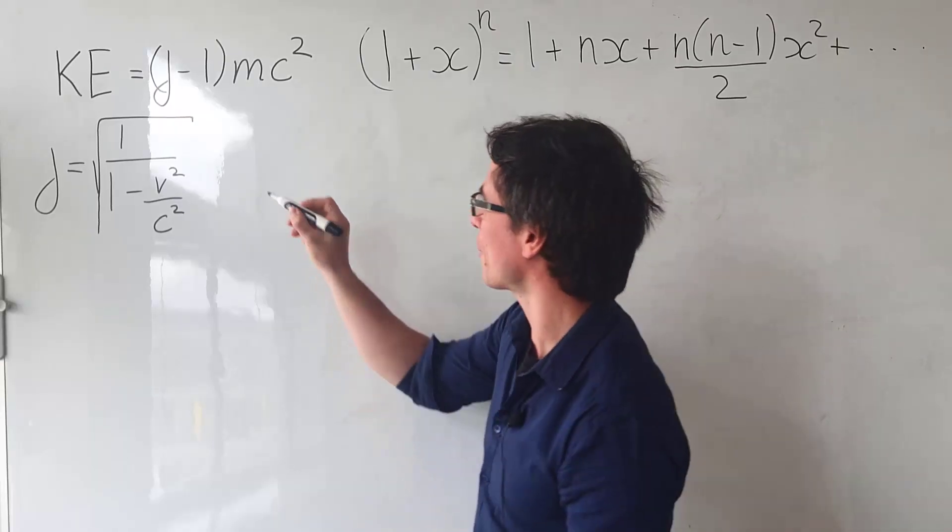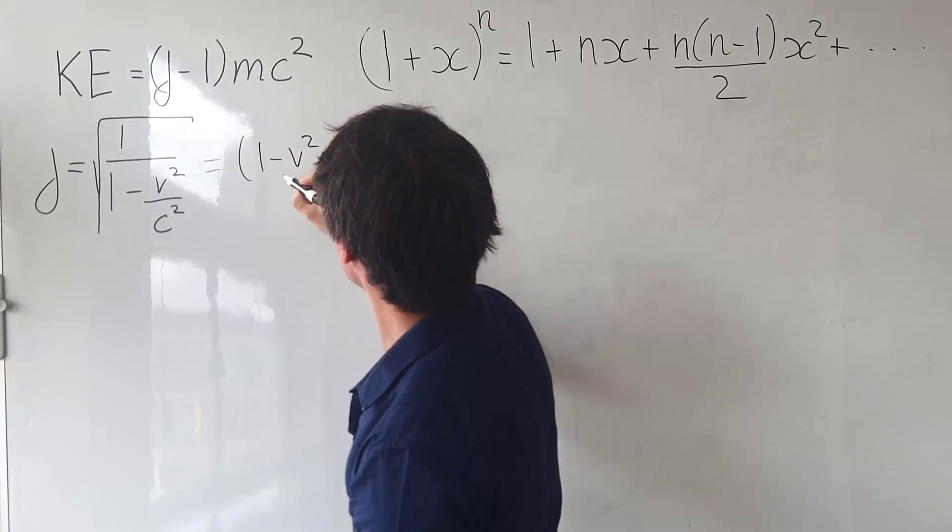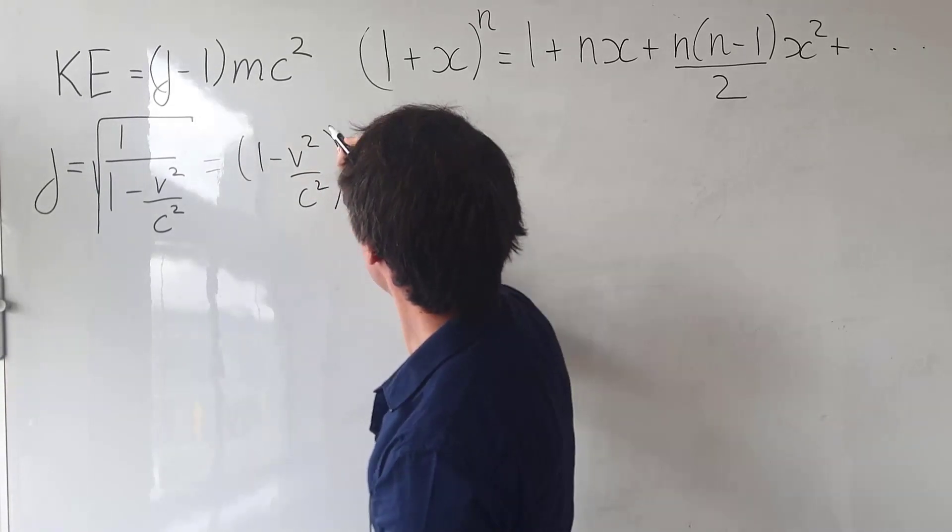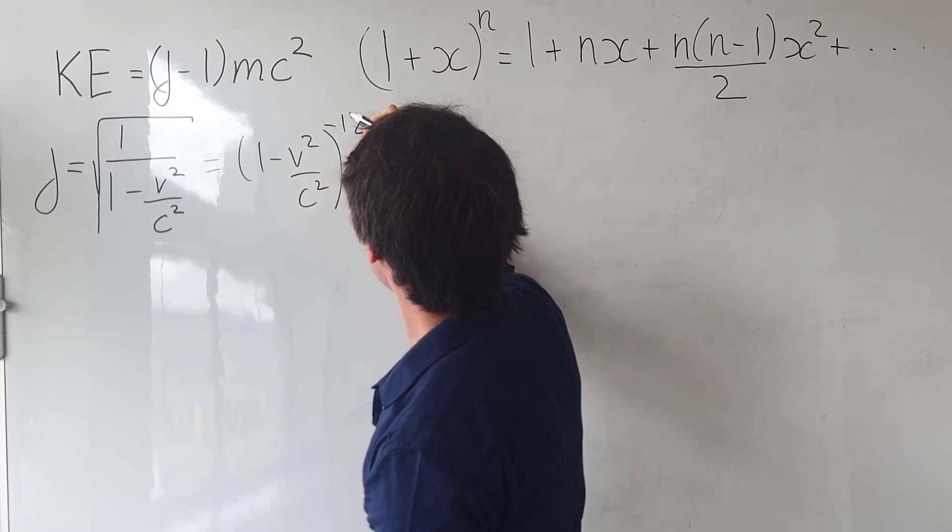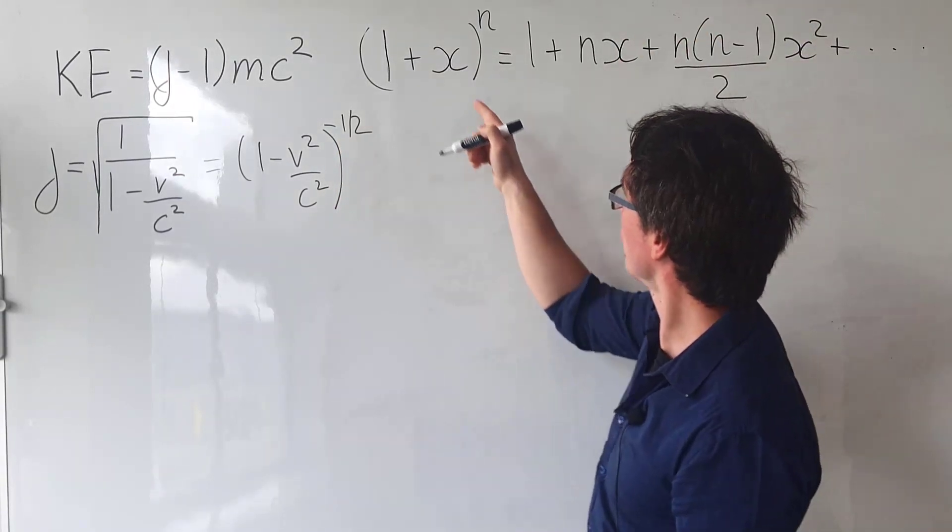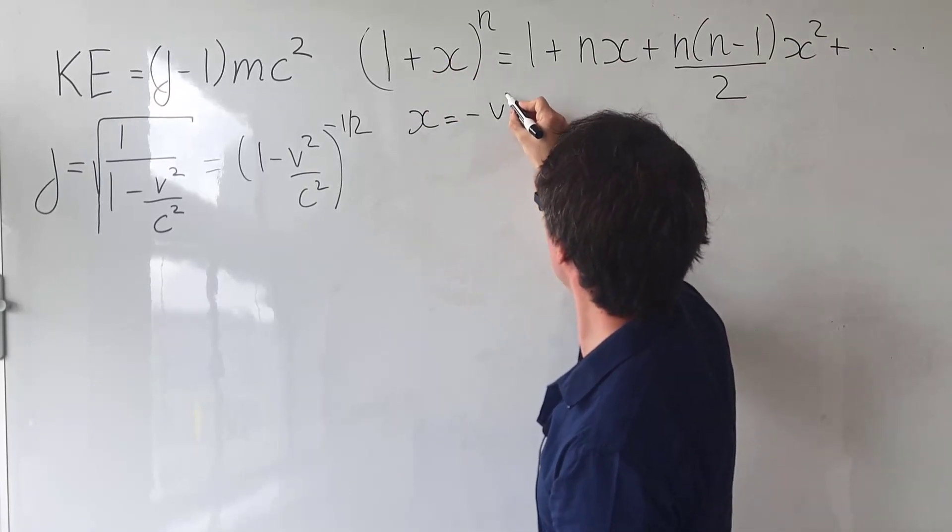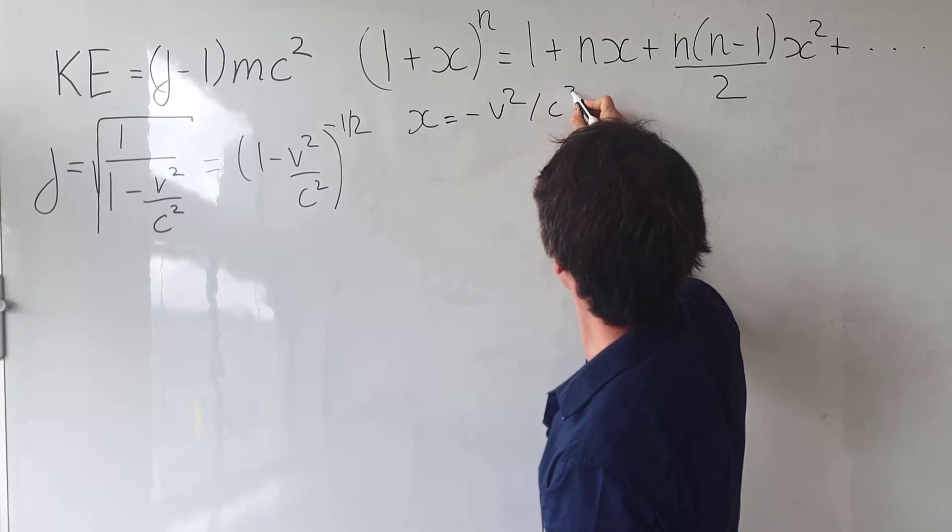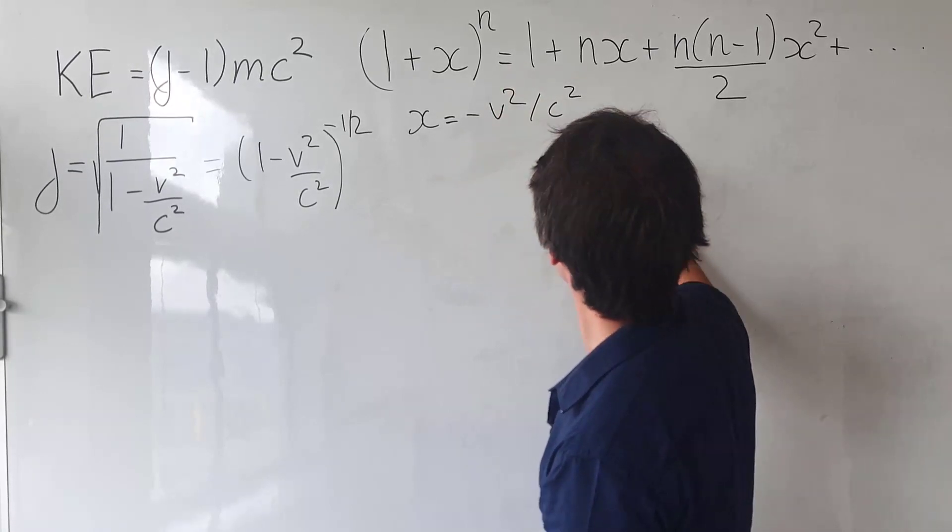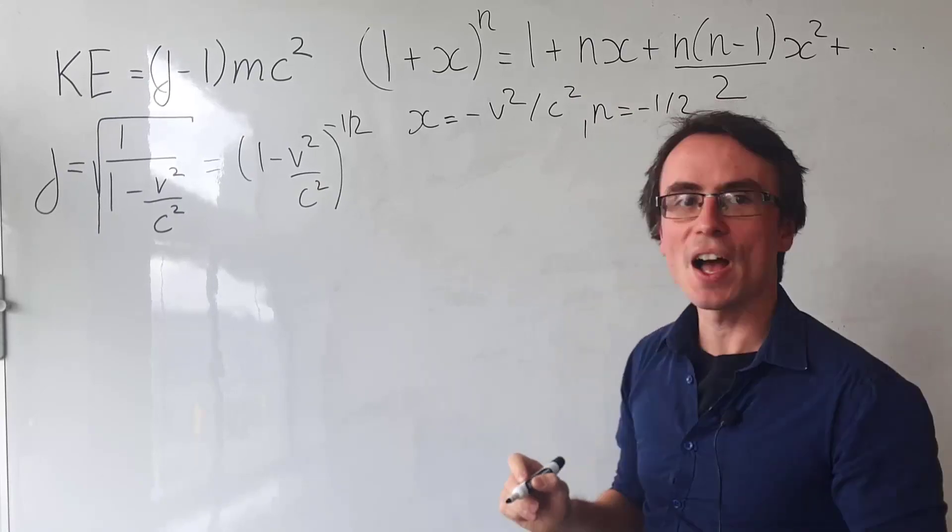I'm going to rewrite the gamma factor as 1 minus v squared over c squared raised to the power of negative a half. Looking at our expression for the binomial expansion, we can set x to be equal to minus v squared over c squared. We can set our n to be equal to negative a half.